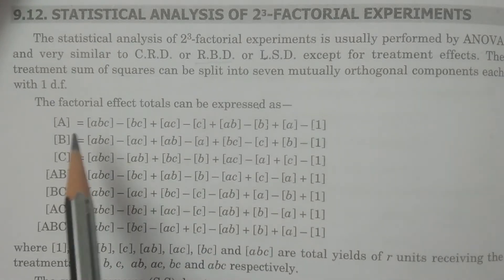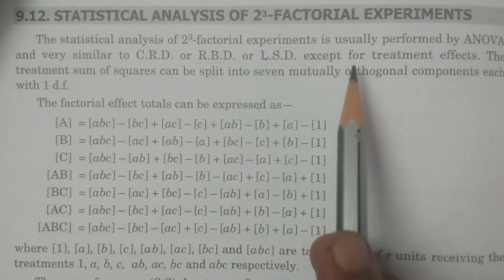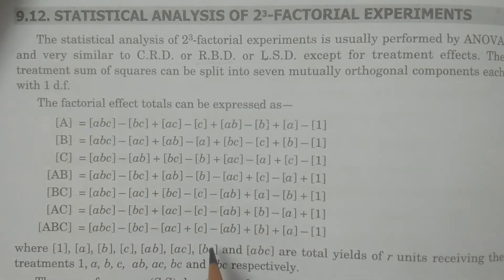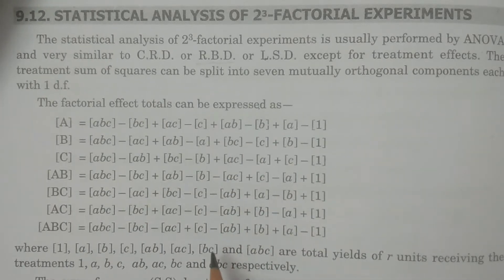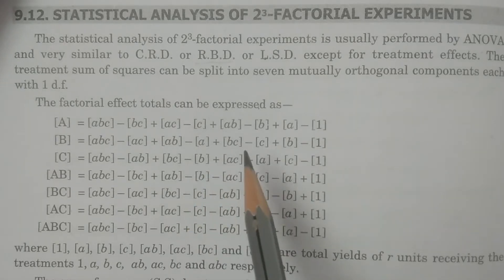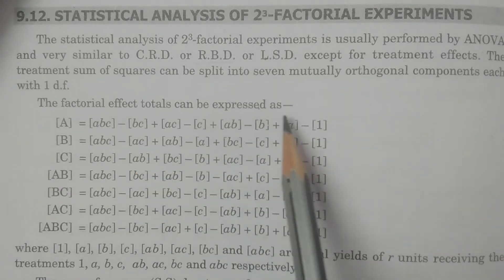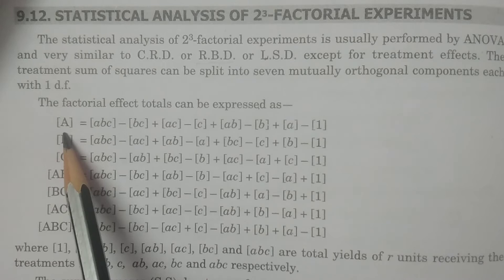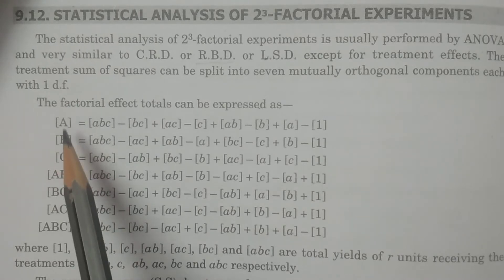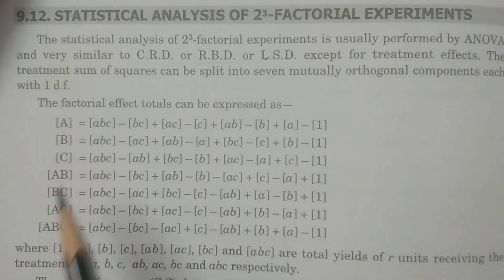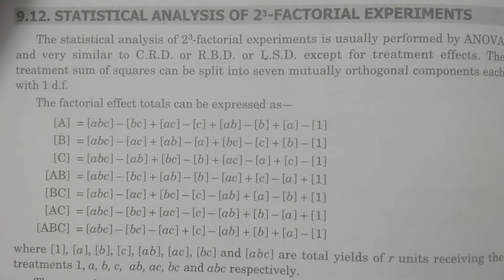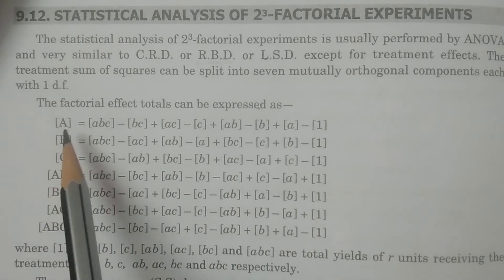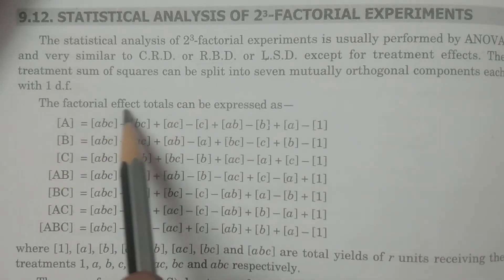Now you write down the factorial effect totals — that's very important. The factorial effect totals can be expressed using square brackets, where a square bracket denotes a total and a round bracket denotes a mean. So square brackets are used for factorial effect totals.